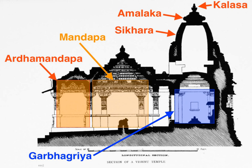There may be further mandapas or other buildings, connected or detached, in large temples, together with other small temples in the compound. Hindu temple architecture reflects a synthesis of arts, the ideals of dharma, beliefs, values and the way of life cherished under Hinduism.